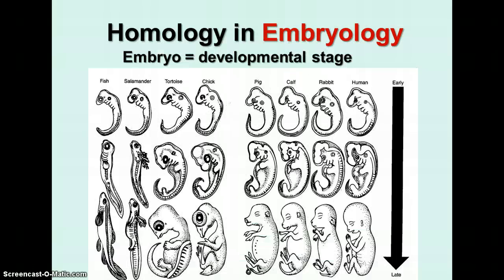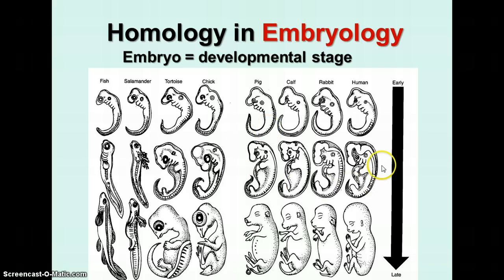Another homology is found in embryology. When we look at the embryos of different animals in their earliest stages, they all look very, very much alike — it would be difficult to tell them apart. In a slightly later stage, fish and amphibians become easier to distinguish, while mammals still look very similar to each other until close to birth. Because they have such similar structures and appearances, they probably had a common ancestor that shared similar developmental stages.